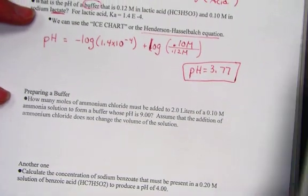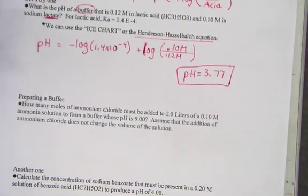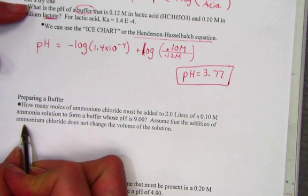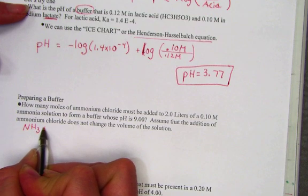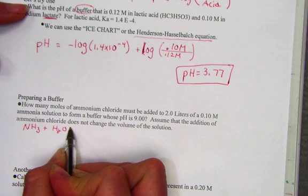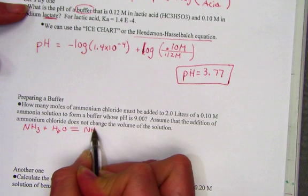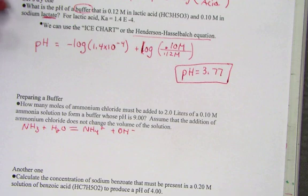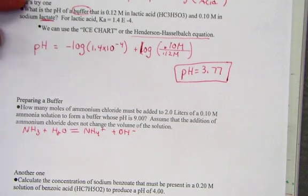Preparing a buffer. How many moles of ammonium chloride must be added to 2 liters of a 0.1 molar ammonia solution to form a buffer whose pH is 9? Assume that the addition of ammonium chloride does not change the volume of our solution. Well, let's get a handle of what's going on. We have a weak base, ammonia, being placed into water and setting up an equilibrium with its conjugate acid, ammonium, and the base, hydroxide.